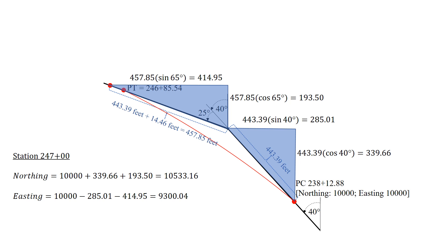For our northing, both of our points are moving north, so those are both positive. We have 10,000 plus 339.66 plus 193.5, giving us a northing of 10,533.16.